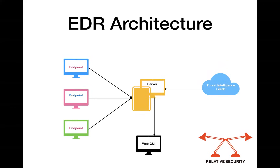In this simple architecture diagram, on the left side you have endpoints with agents installed, sending all recorded behavior to the server — the main collection point. Through the graphical interface, you access the server to review artifacts, define your own policies, response methods, playbooks, remedial actions, and prevention actions that the endpoint should take. On the right you have threat intelligence feeds.